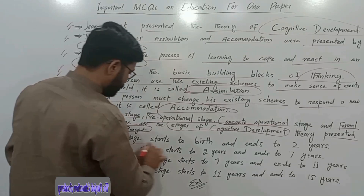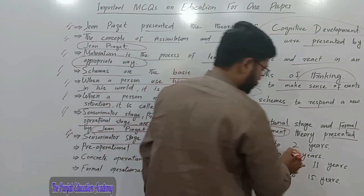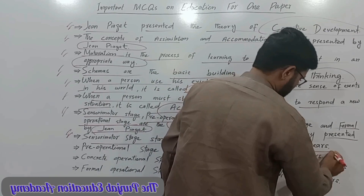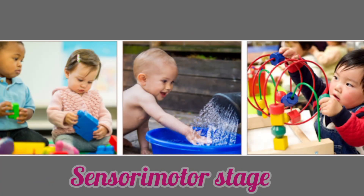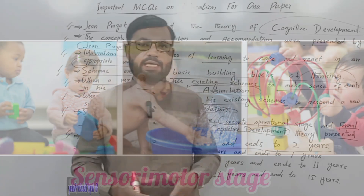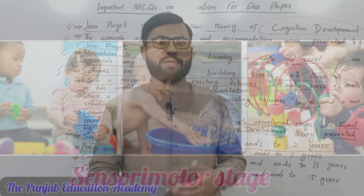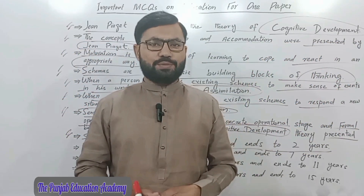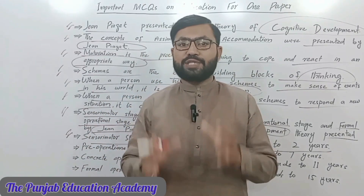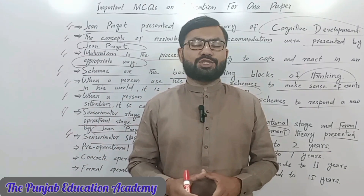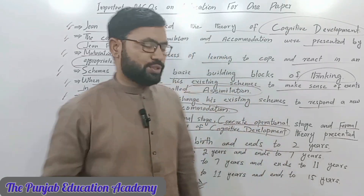The Sensory Motor Stage starts from birth and ends at two years. According to the cognitive development theory presented by Jean Piaget, 'out of sight, out of mind' and object permanence are the major features of this stage.